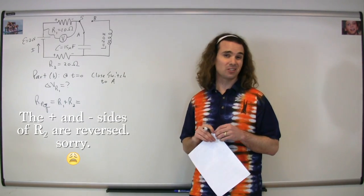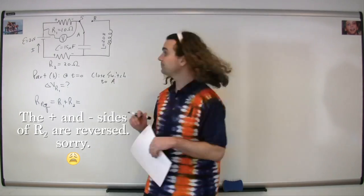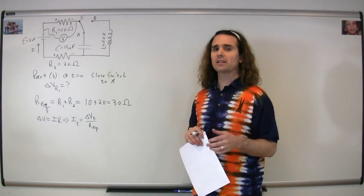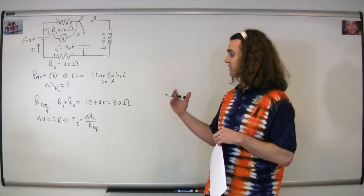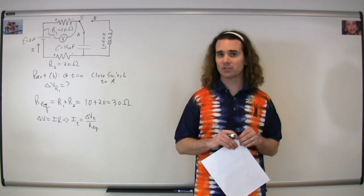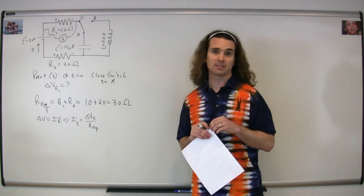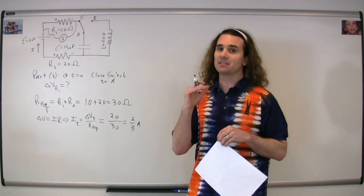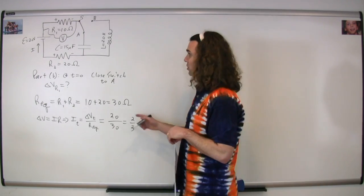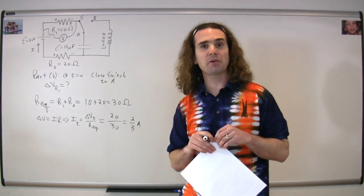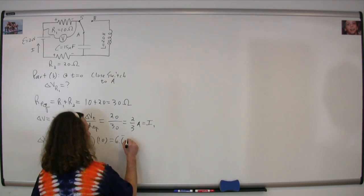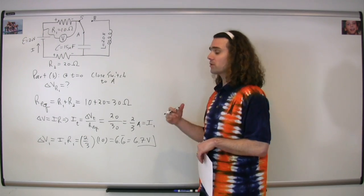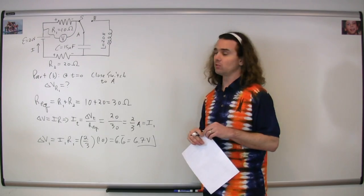The equivalent resistance for two resistors in series is just R1 plus R2, which is 10 plus 20 or 30 ohms. Current equals the electric potential difference divided by the resistance, so the total current is 20 volts over 30 ohms, which works out to be two-thirds of an amp. This is also the current through resistor 1. The electric potential difference across resistor 1 is current times resistance: two-thirds times 10, or 6.7 volts — the answer to part B.